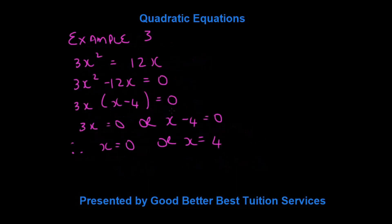Let's look at our third example, and this is a common factor example. We have 3x squared is equal to 12x. Remember, I told you we want the right-hand side equal to 0, so we take that over to the left-hand side, and we say 3x squared minus 12x is equal to 0.